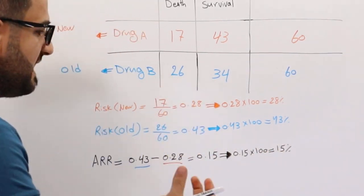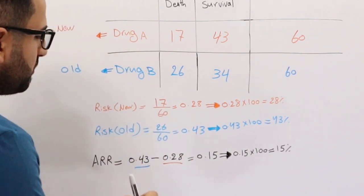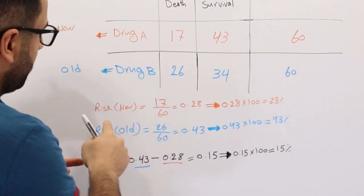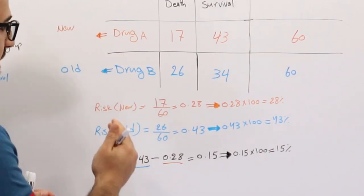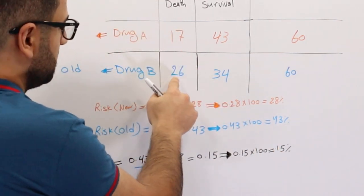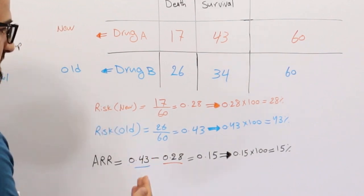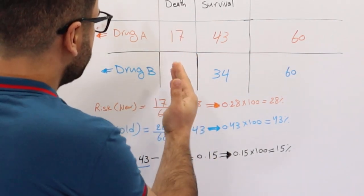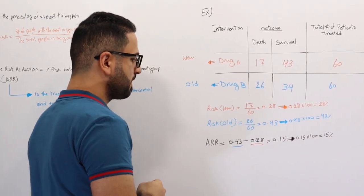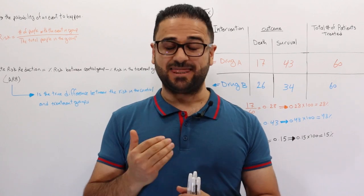What does this mean? When people took the new medication, Drug A, they reduced the risk of death by 15 percent in comparison to the old medication. That's what absolute risk reduction gives us: the true difference in risk between the two groups. If you have any questions or comments, please leave them below, and thank you for watching.